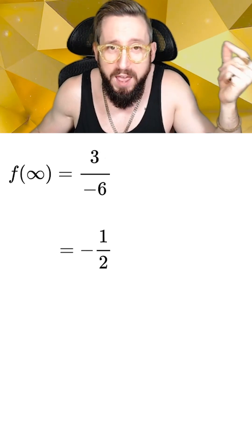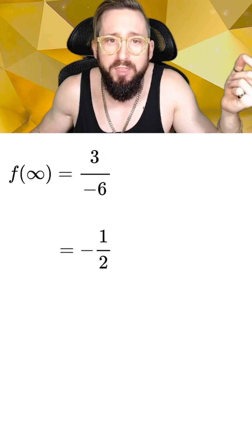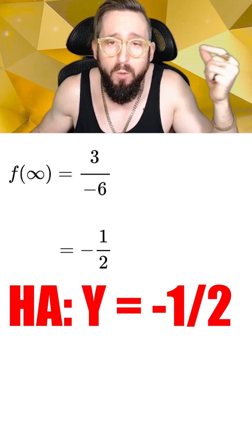which simplifies to negative one-half. So we can say that this function will approach y equals negative one-half as we go really far to the right, and thus the function has a horizontal asymptote at y equals negative one-half.